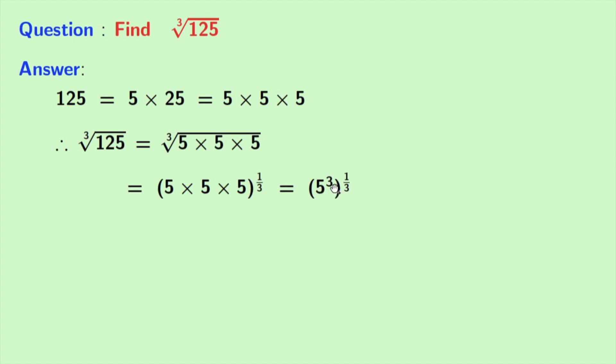Using the law of a power m power n is equal to a power m times n. Here a is 5, m is 3, and n is 1 by 3. Now look that in the power, 3 and 3 gets cancelled.